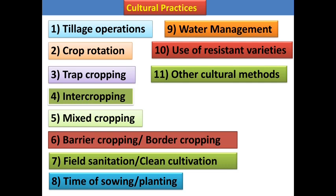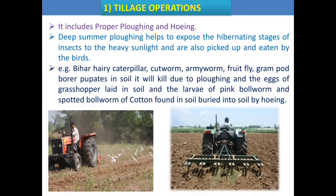The different cultural practices include: tillage operation, crop rotation, trap cropping, intercropping, mix cropping, barrier cropping or border cropping, field sanitation, clean cultivation, time of sowing or time of planting, water management, use of resistant varieties, and other cultural methods.